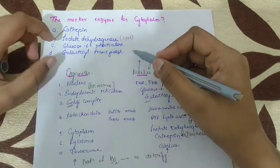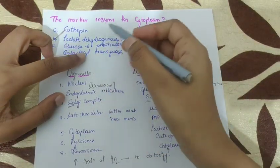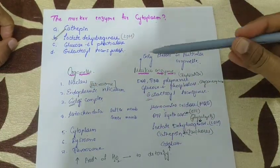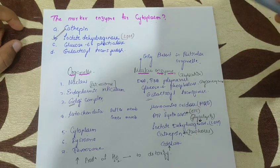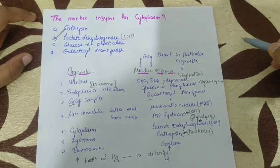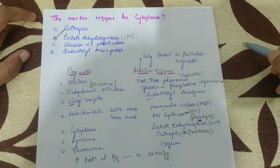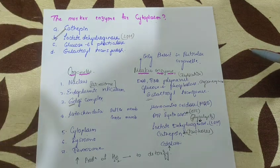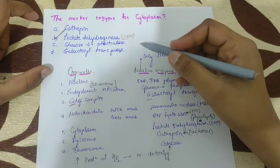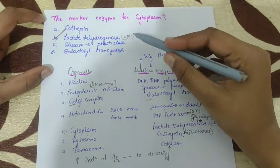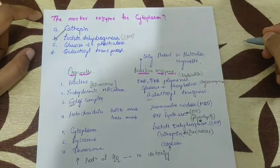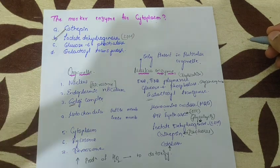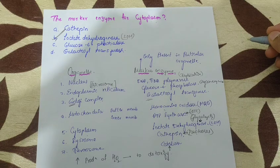This is Preeti and you are watching Medresolution. In this video I will be discussing enzyme markers. Enzyme markers are the enzymes that are present only in particular organelles of the cell, such as ribosomes, nucleus, endoplasmic reticulum, Golgi complex, peroxisomes, and other organelles. After cell centrifugation, we segregate the organelles based on identifying the marker enzyme.